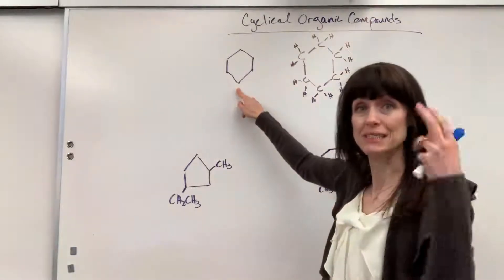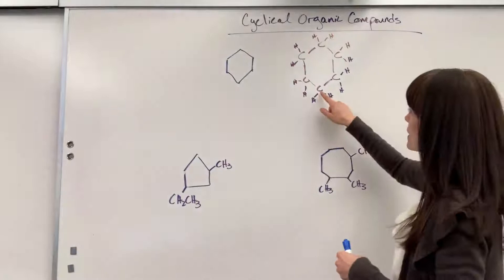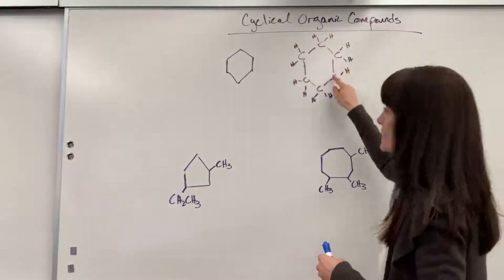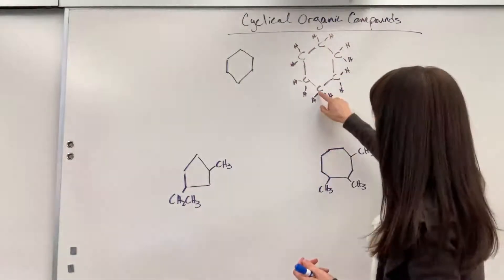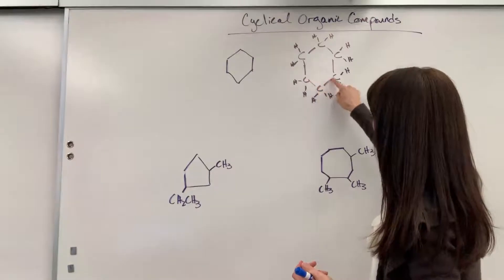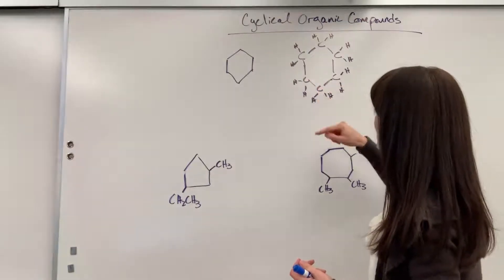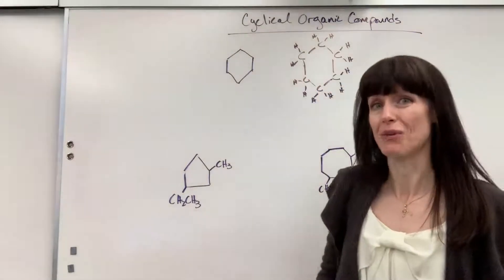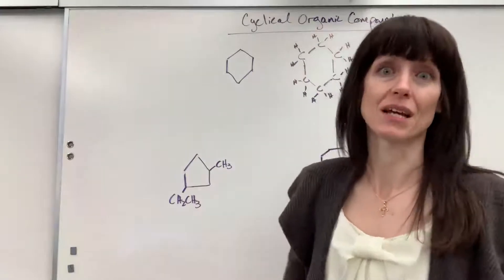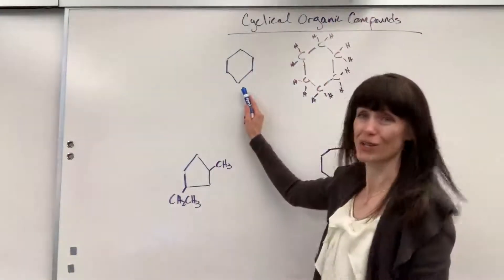That is a six-membered ring and here's what it is. One, two, three, four, five, six carbons and notice each carbon has a single bond to two carbons. So each carbon has a single bond to two hydrogens. We just don't want to take the time to write all that. So here's our shorthand.